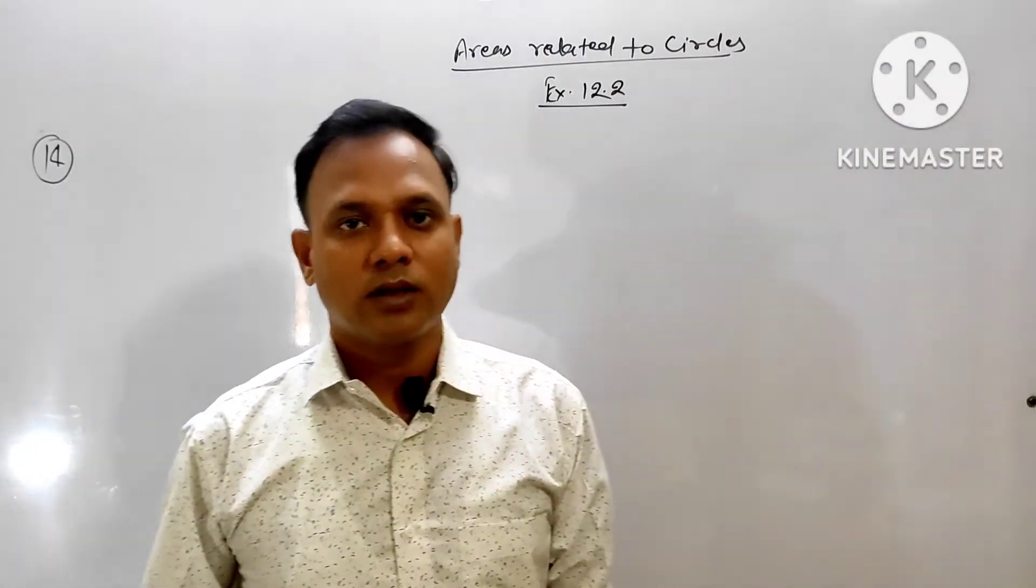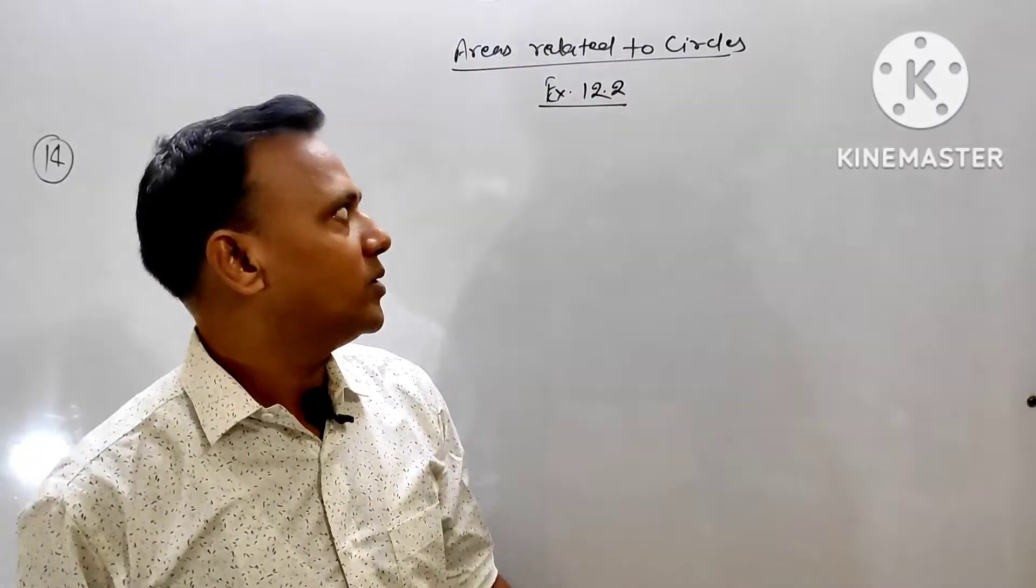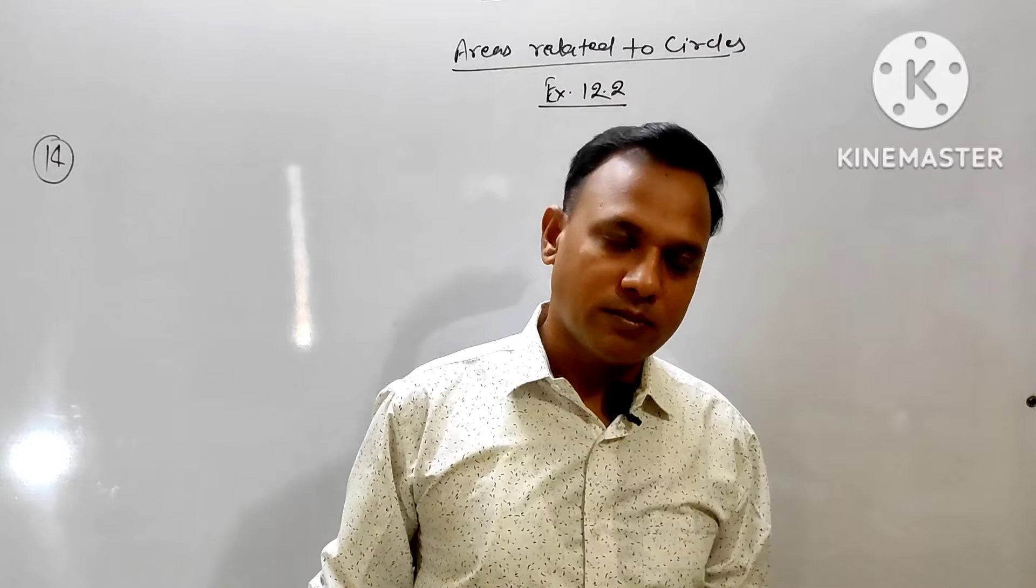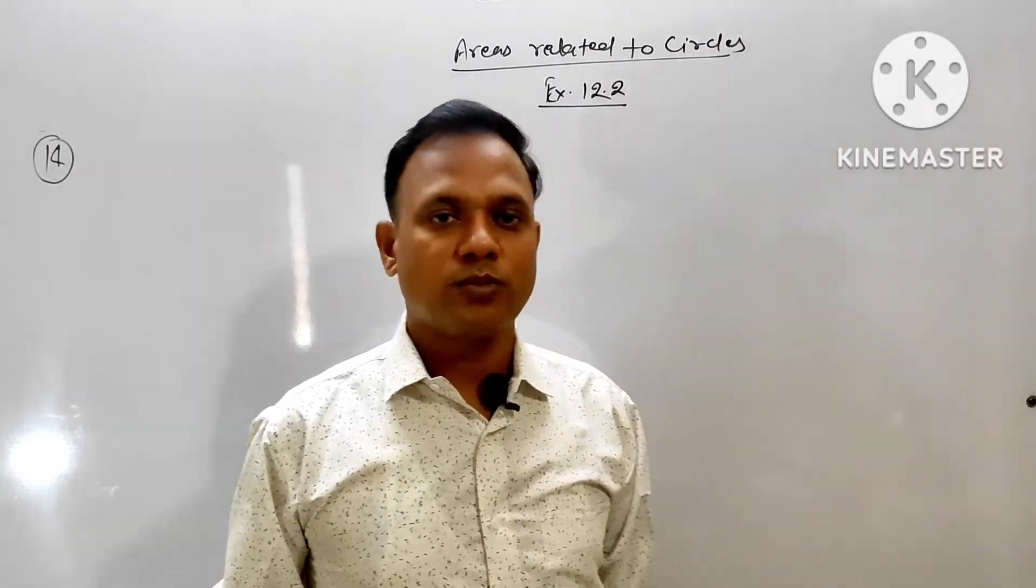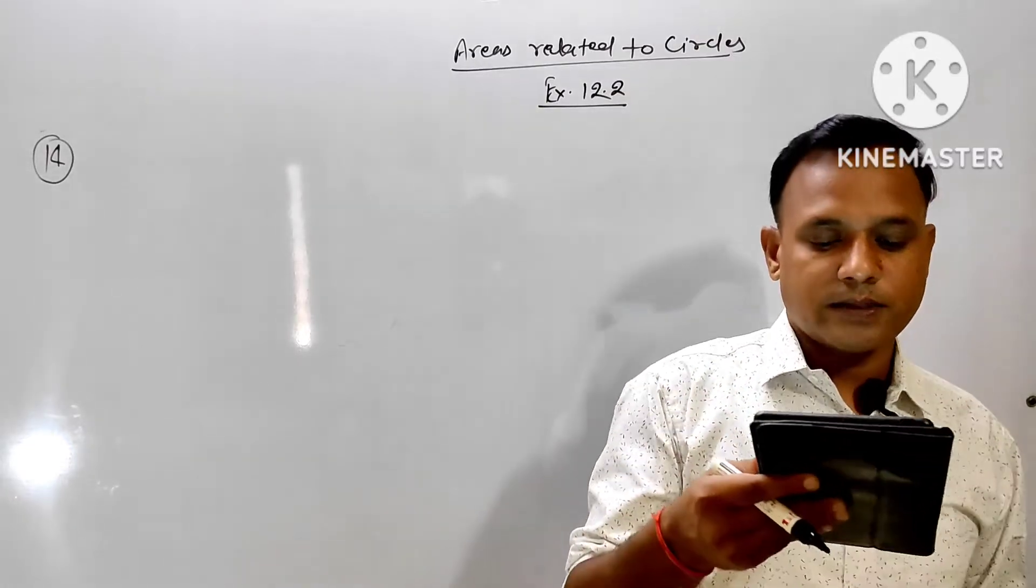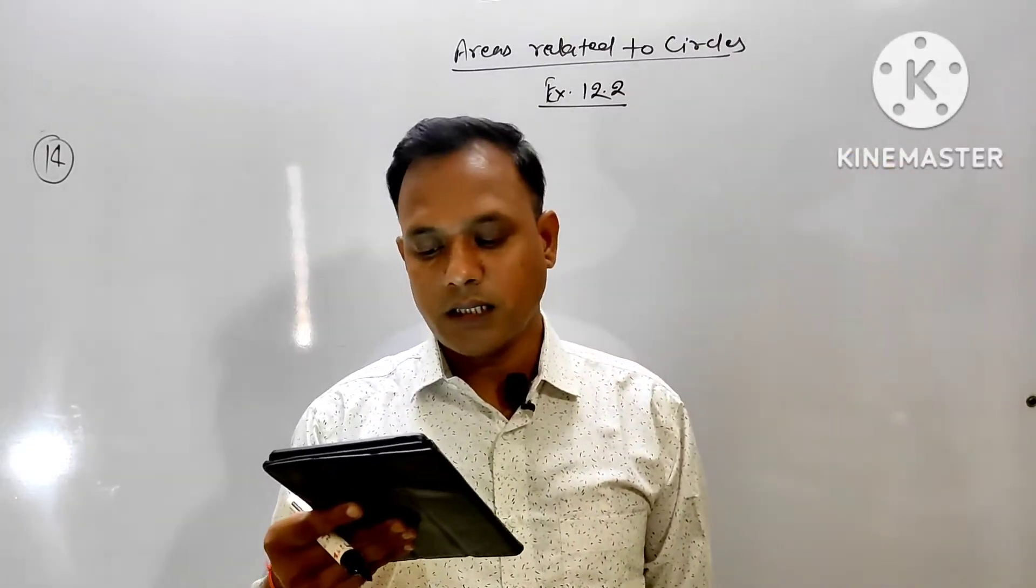Good morning friends. Today I am going to discuss area related to circle, exercise 12.2, question number 14. This is the most important question. Question number 14 is: area of sector of angle P in degrees of a circle with radius R.